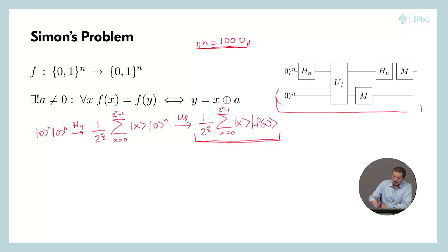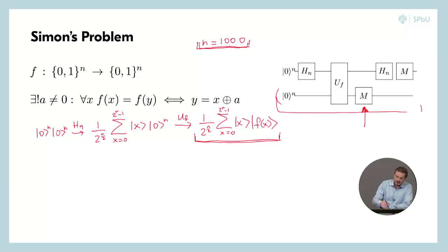And we are now ready to perform this measurement. Honestly we don't need this measurement step here. We do it for the sake of clarity. And if we measure this output register we will get only one function value in it, like f of some x zero. And in this register we will have two values corresponding to this value f of x: x zero itself plus x zero plus a. So this is what we will have in the input register.